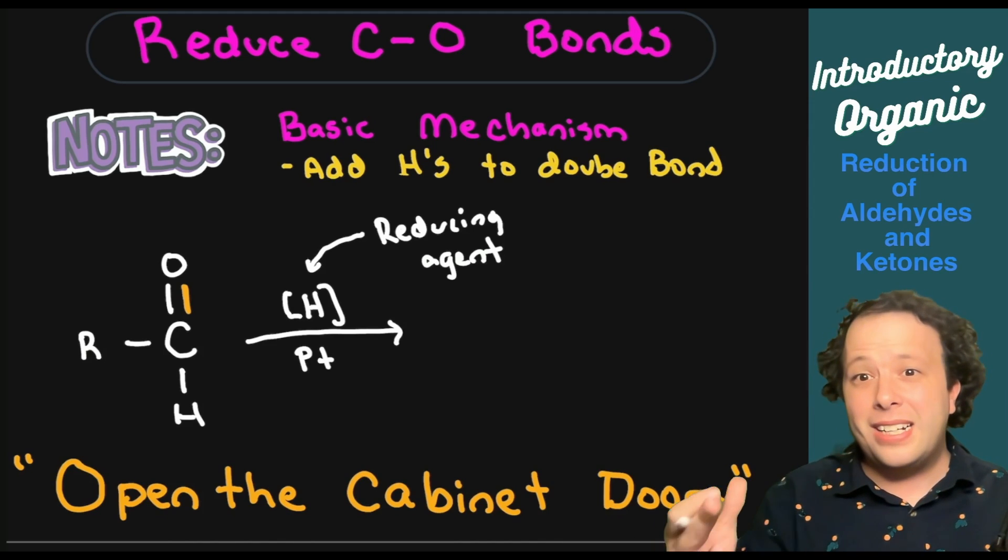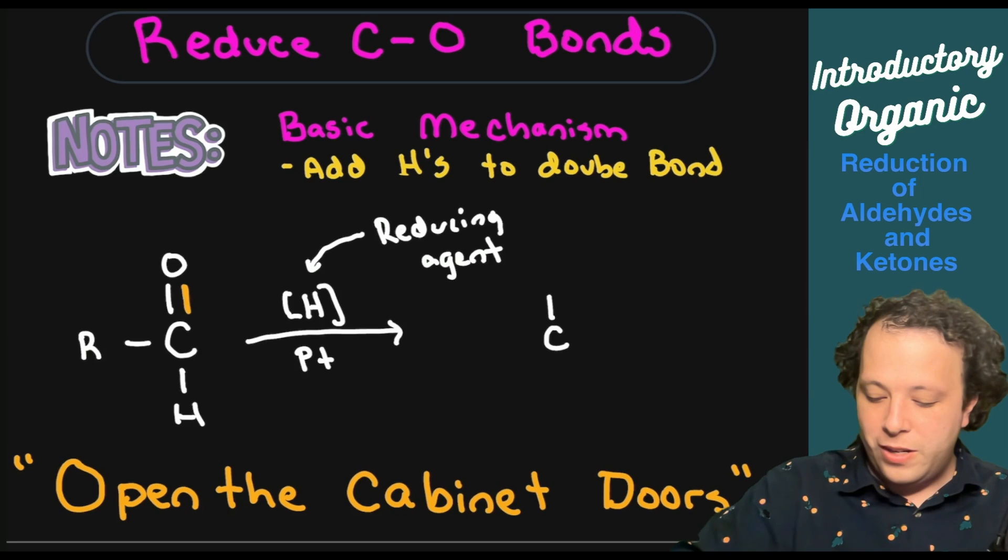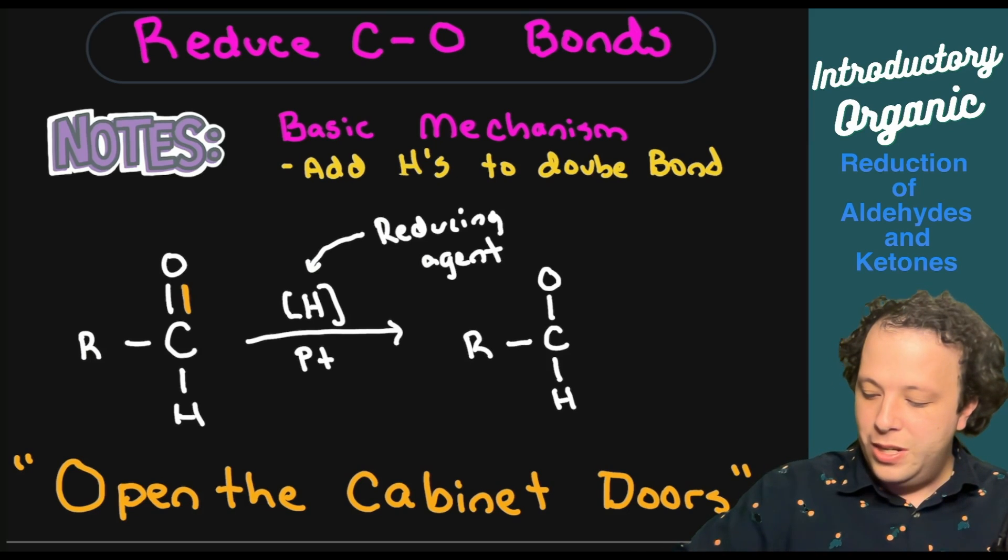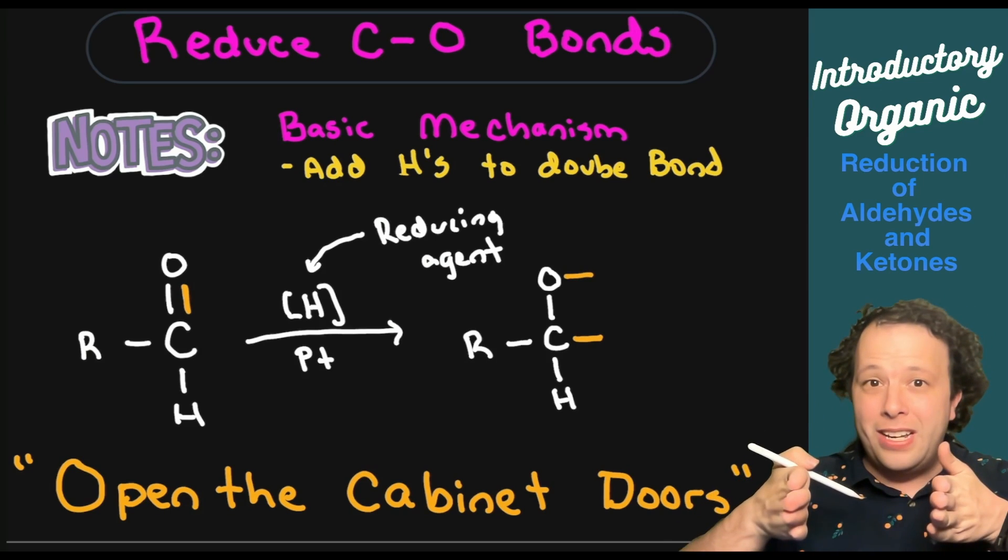Depending on your class, every teacher is a little different in how much you need to know. If we redraw our carbon structure, the only thing changing is our functional groups, but we are also adding two components. We're going to be opening up the doors on our double bond.